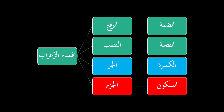Then you can have secondary signs that replace these primary signs when you can't use the primary signs to show the rafi', nasb, jarr, or jazm. For example, when something is marfoo', its sign of rafi' may be the waw instead of the dhammah — 'wa'alamatu rafi'ihi al-waw niyabatan 'an al-dhammah.' Likewise 'bani Namir' — the ya' here is a replacement for the kasrah in the jarr case. So you have primary signs and secondary signs for each of these four cases, and jazm will also have secondary signs that can replace the primary signs when they aren't feasible.